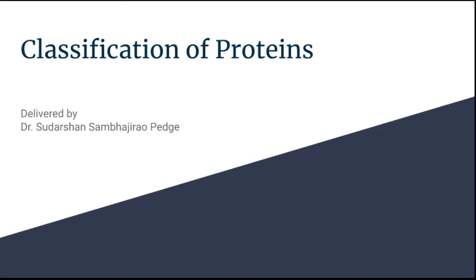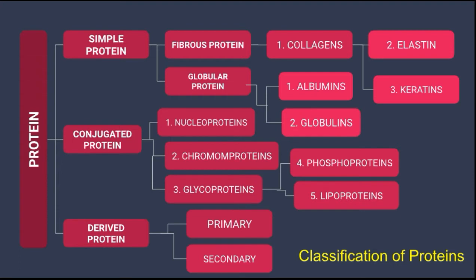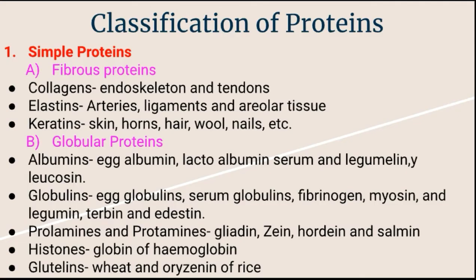I will repeat yesterday's points. Yesterday we discussed about classification of proteins. In the classification of proteins, we have seen the types of proteins. There are three types: simple protein, conjugated protein, and derived protein. Yesterday we discussed about only simple protein, covering fibrous proteins as well as globular proteins.